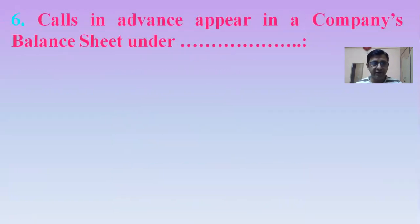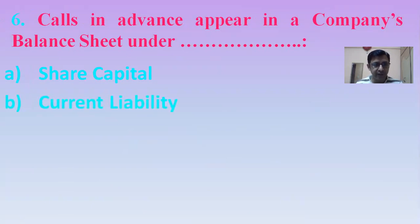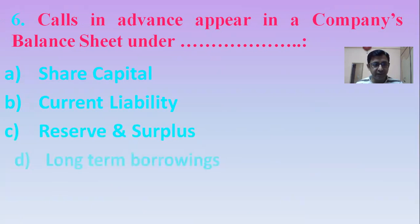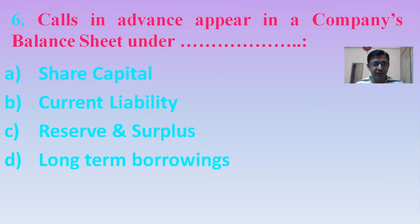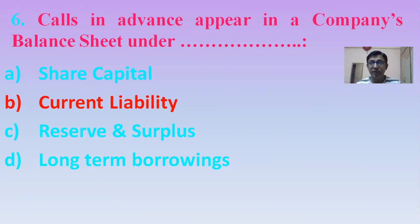Next MCQ: Calls in advance appear in a company's balance sheet under which head? Option A: Share capital. Option B: Current liability. Option C: Reserves and surplus. Option D: Long-term borrowings. The right answer is current liability — calls in advance will be shown under current liability. Note: it is calls in advance, not calls in arrears.